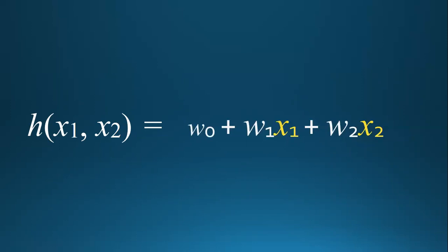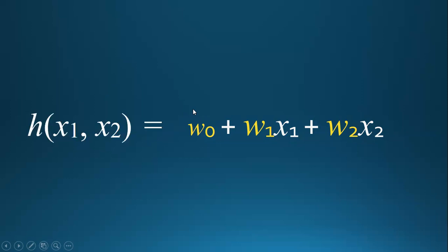This additional weight w0 just serves to either move the function up or move the function's value down. You can think of it as a weight multiplied by a dummy value like the number one. Sometimes in the literature people call this variable weight zero a bias, in machine learning or deep learning. So we have weights that are multiplied by the inputs x1 and x2, and we separately add some bias to the result as well. You will hear both of those terminologies used when people talk about neural networks and machine learning.